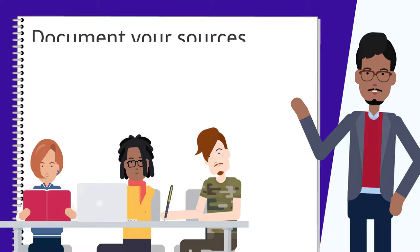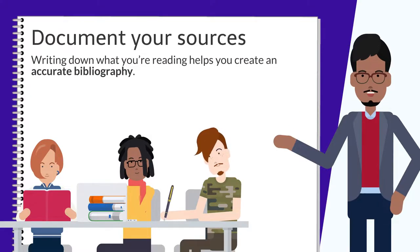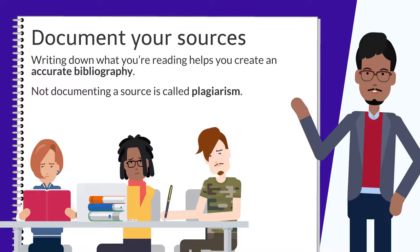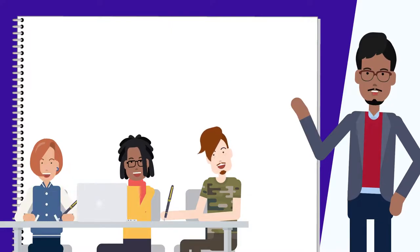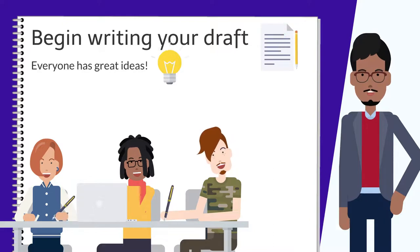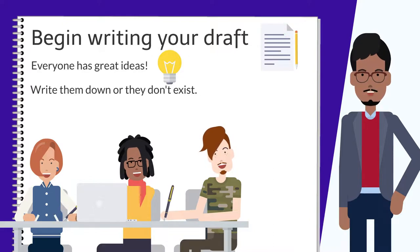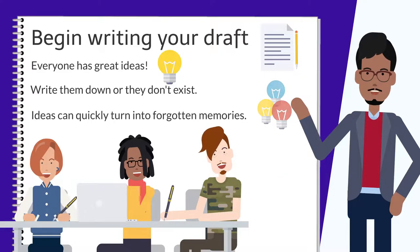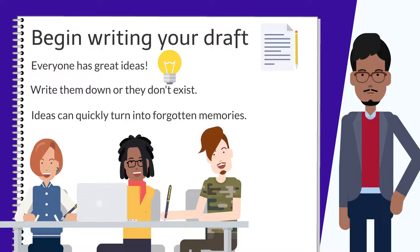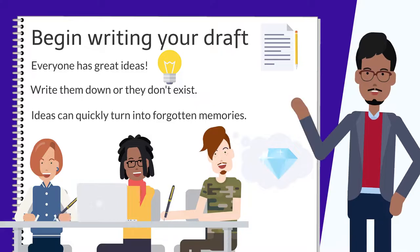Finally, as you work, make sure you've documented your sources. Writing down what you're reading while you conduct your research or interviews helps you create an accurate bibliography. Not documenting a source is called plagiarism. Now that you have your topic, you can begin writing a draft of your speech. Remember, everyone has great ideas, but until they're written down, they don't exist — ideas can quickly turn to forgotten memories. Begin writing early and make note of everything, even if it seems unimportant now. You never know where that next gem will come from.